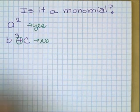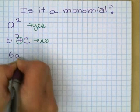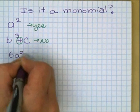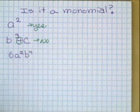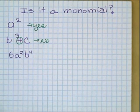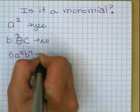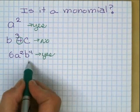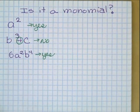Let's look at a third example. 6a to the second, b to the fourth, is that a monomial? Yes it is. Again, there are no addition or subtraction signs and no negative exponents.